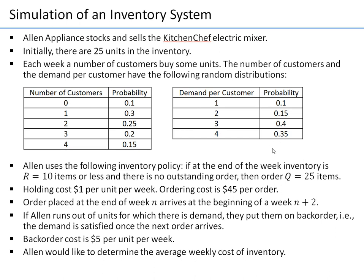When Allen sells those products, they have to buy them from the supplier, and they will use the following inventory policy: every time they have 10 items or less, they will order another 25 units, provided there isn't an order already being shipped. We also have to look at costs: $1 per week per unit for holding, and $45 for ordering regardless of quantity. When an order is placed in a certain week, it will be delivered at the beginning of two weeks later.